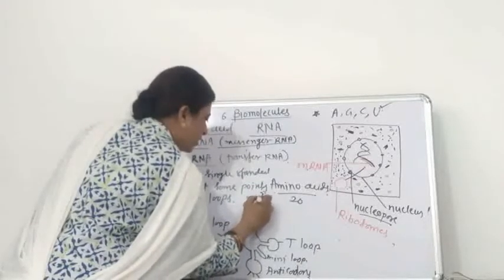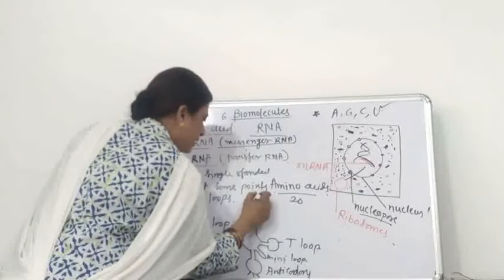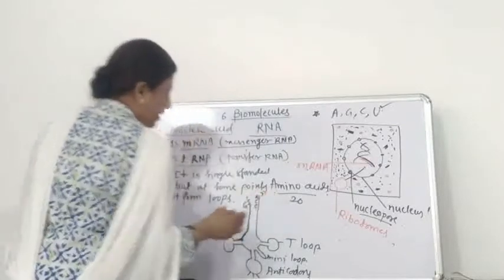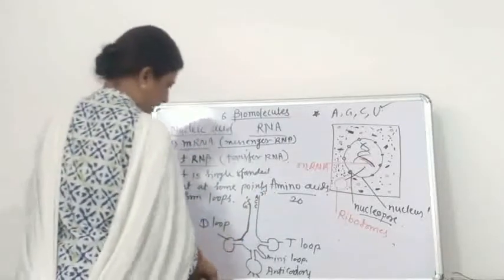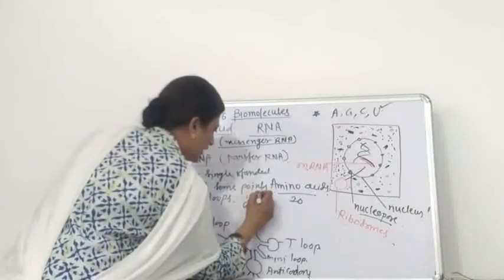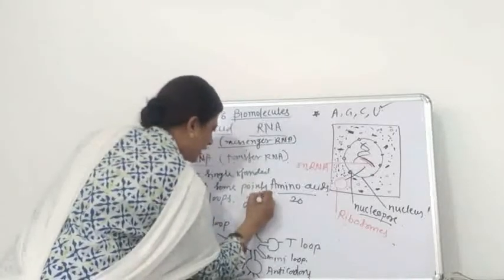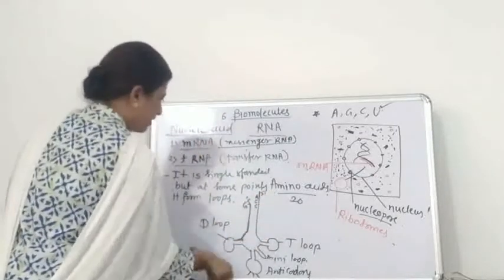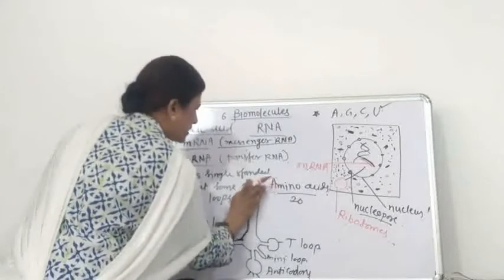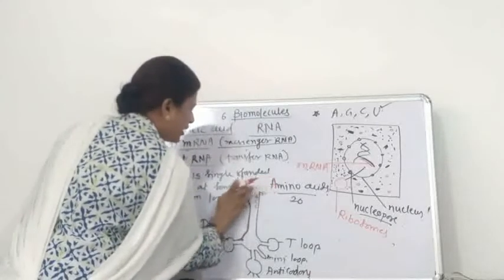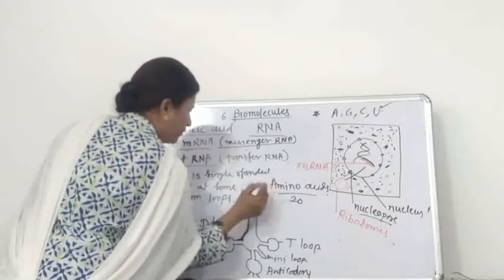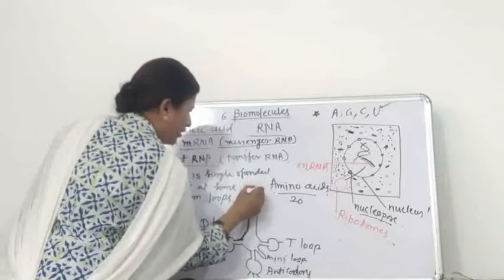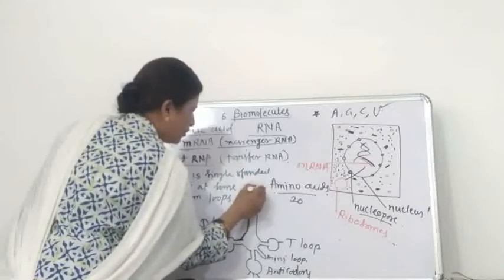At one end of the tRNA, the cytosine and adenine are present — that is the CCA end. At this end, any type of amino acid is also attached.